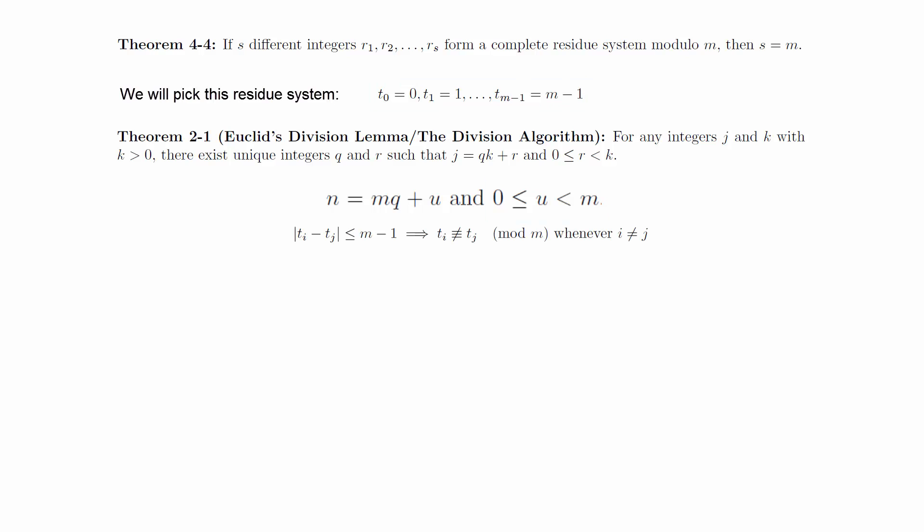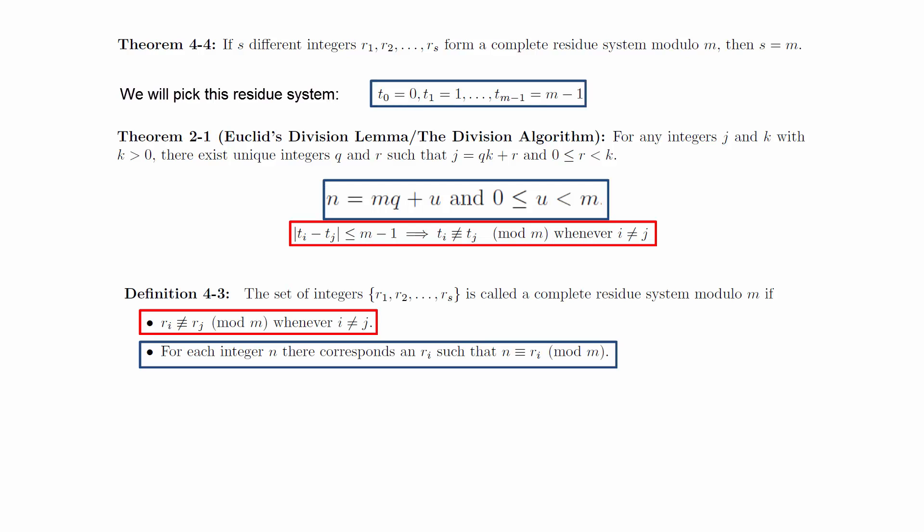Also, since the absolute value of t sub i minus t sub j is less than or equal to m minus 1, it's impossible for two of the t sub i to be equivalent to each other modulo m. These two observations together show that the set 0, 1, up to m minus 1 is a complete residue system modulo m.